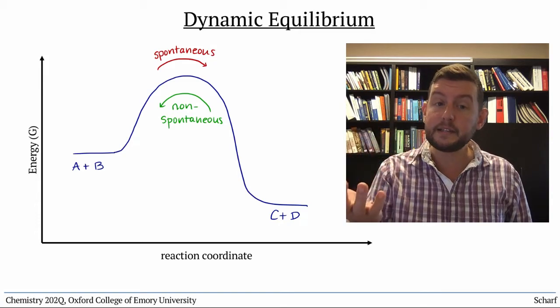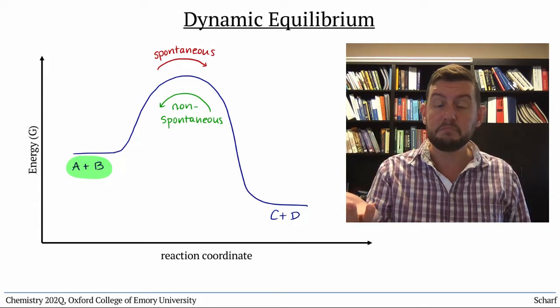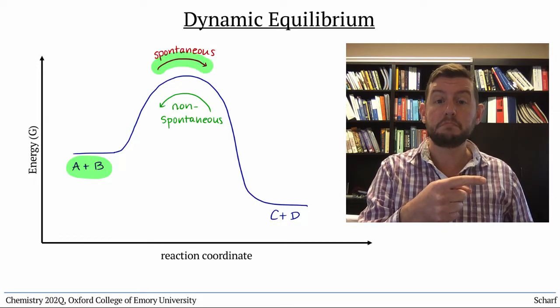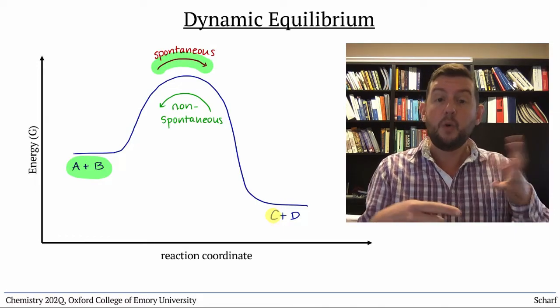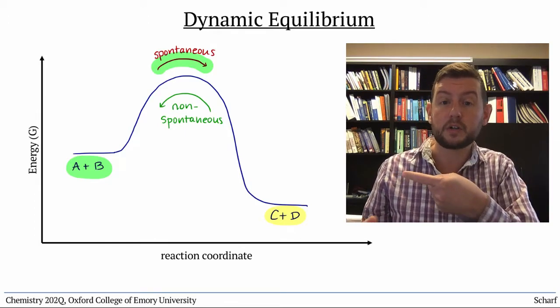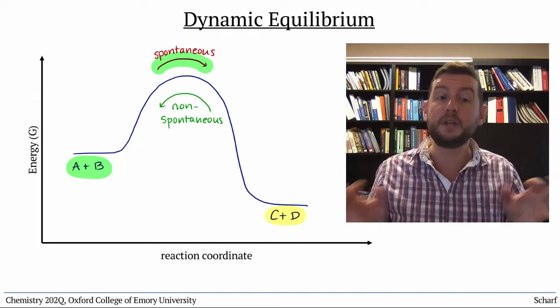If you put some reactant molecules together in a container, at first, only the forward reaction is possible, since no products are present yet. Once some products form, the reverse reaction also occurs, though maybe only a little bit.